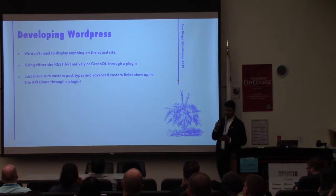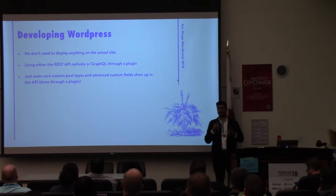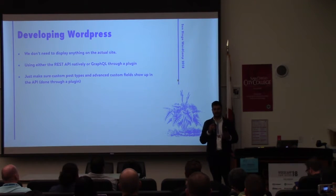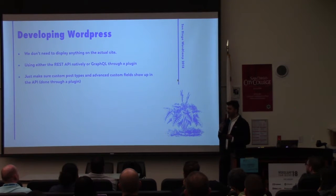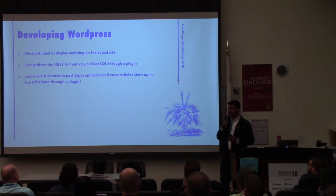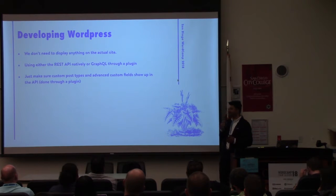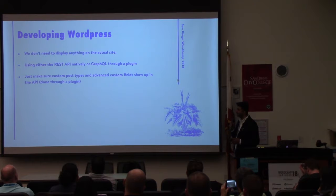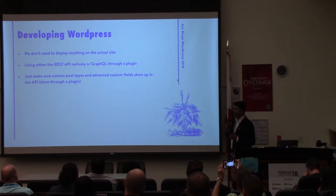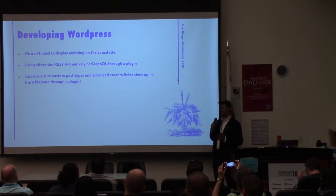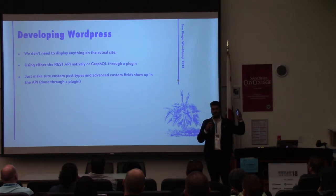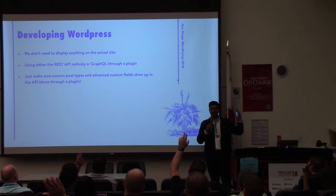Let's talk about developing our WordPress site. You don't need to really display anything on your site because we're only going to be using the data — so we don't need to worry about the theme or selecting the right theme. We're going to be using the REST API, but there's also a plugin that lets you use GraphQL, which is really powerful. For this talk we're just going to use the REST API. We just need to make sure that custom post types and Advanced Custom Fields show up in the API. Show of hands — who uses ACF for their projects?